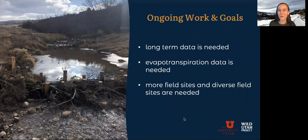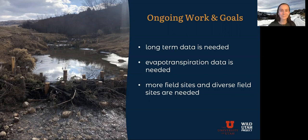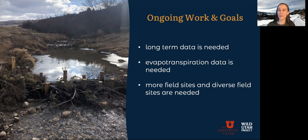Thinking about ongoing work and goals for this project, long-term data is needed. Here we only have data for 2019 — only one season before beaver dam analogs were installed and then a couple months afterward. Some long-term data is currently being collected by another partner at the University of Utah, Adam Culbertson, and that will help constrain our findings a little bit better. We also need that evapotranspiration data. It's easy to assume that it maybe wasn't significant enough in just one season to make a big difference, but if the stream morphology changes and plants really start to grow here, as previous studies have seen, evapotranspiration could become more of a significant draw on stream flow. And then we need more field sites and diverse field sites — this stream had a groundwater table relatively connected to the stream, but that's not always the case, and that could really change how stream hydrology responds to beaver dam analogs.